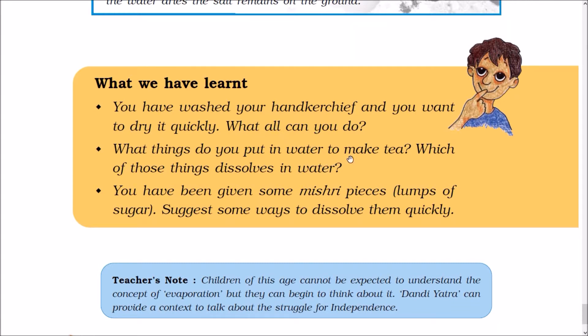What things do you put in water to make tea? Which of those things dissolves in water? For making tea, I put sugar, milk, and tea leaves in water. Sugar and milk dissolve in water.